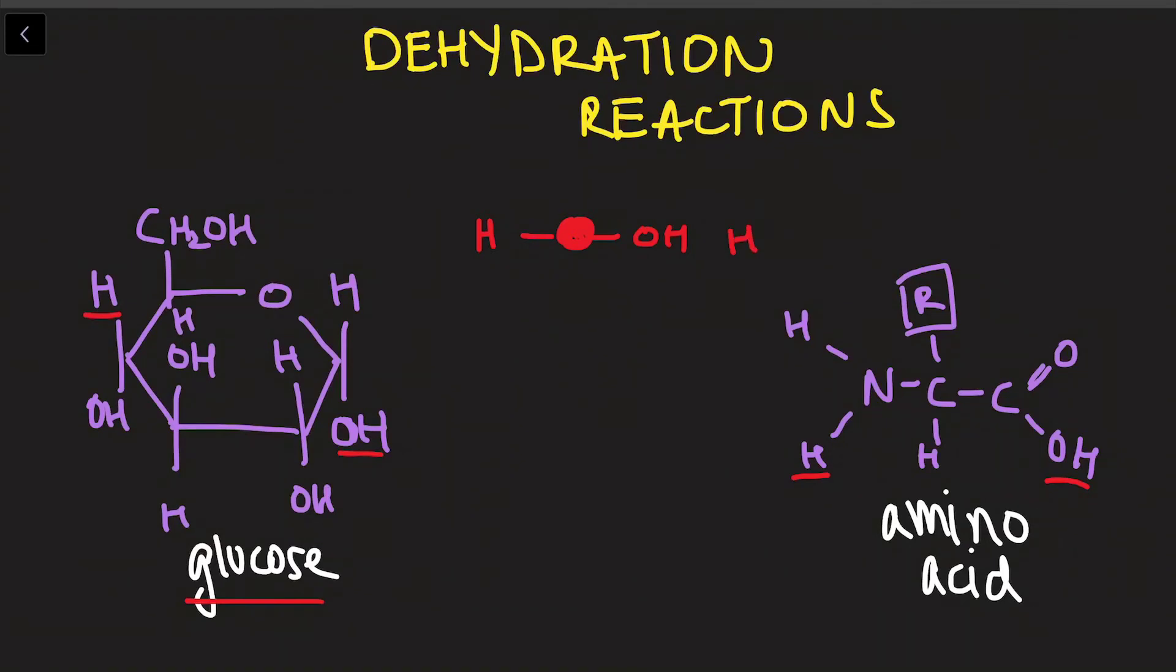So this is how two monomers bond. Let's say I have another monomer here. The hydroxyl group and the hydrogen atom combine to form a water molecule. Now this water molecule leaves, and it leaves the two monomers covalently bonded like this. This is why it's called a dehydration reaction, because a water molecule is removed to form the covalent bond between the two monomers.